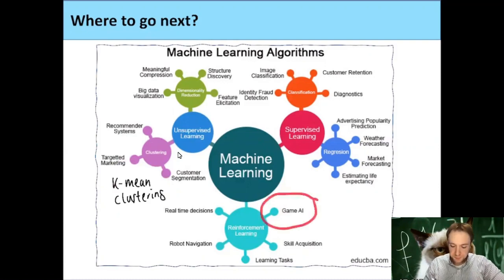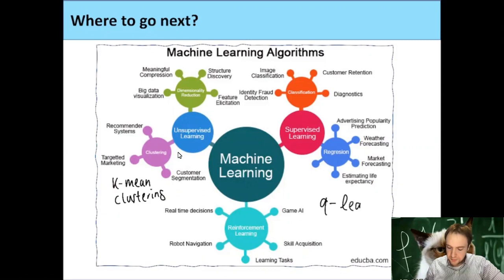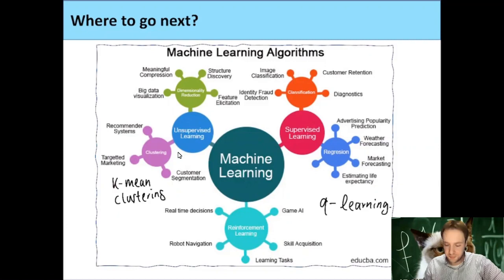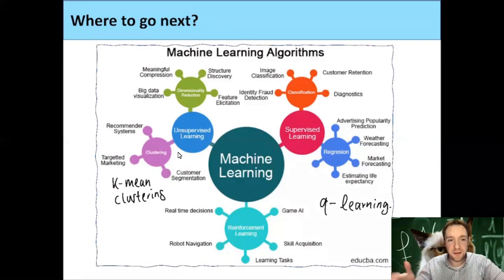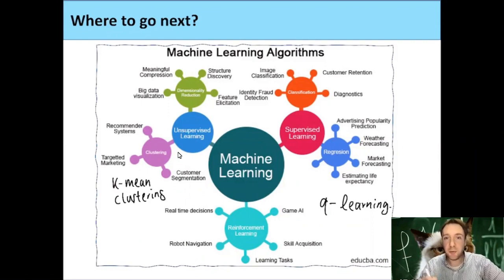The other option would be reinforced learning, and then here, game AI. There's a thing called Q-learning, which I think is quite fun. Maybe we can try to write a small game AI which learns by playing against itself, and by trial and error learns how to play a certain, maybe really simple game. So maybe you can think during this lecture today which you would prefer, and then maybe in the end I will ask again.